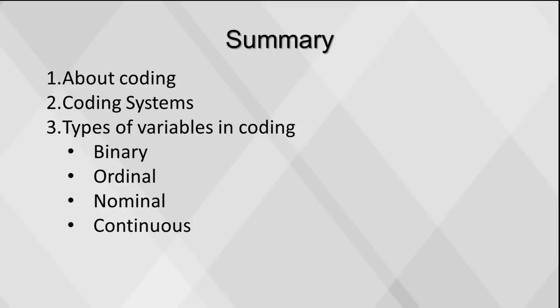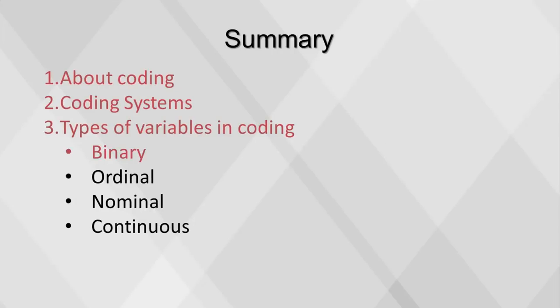That concludes our video on coding with variables. Today we covered some basic information about coding, coding systems, and types of variables in coding, including binary, ordinal, nominal, and continuous.